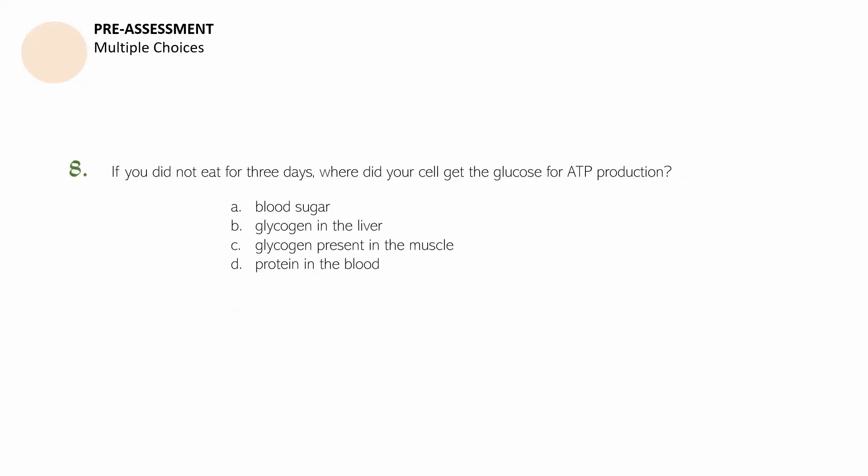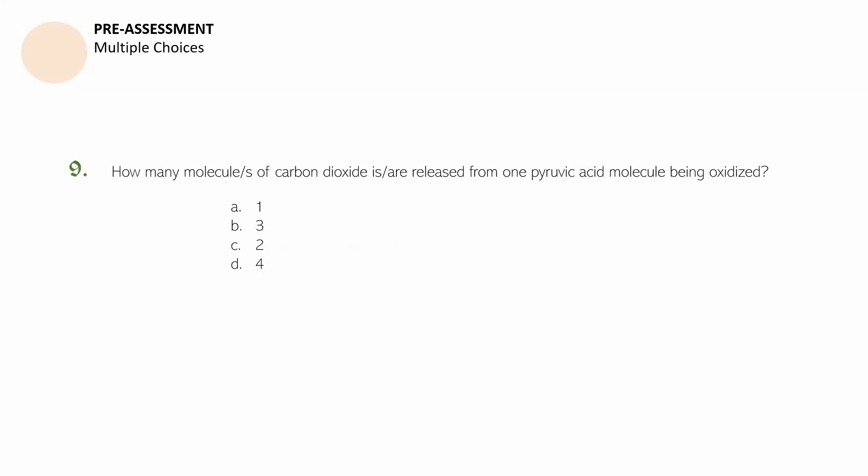Question number eight: If you did not eat for about three days, where did your cell get the glucose for ATP production? You may pause this video if you need more time. Question number nine: How many molecules of carbon dioxide are released from one pyruvic acid molecule being oxidized? A. One. B. Three. C. Two. D. Four. You may pause this video if you need more time.